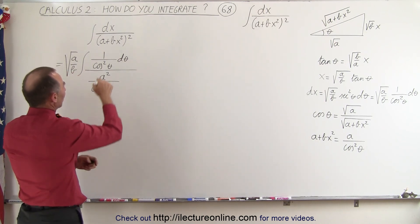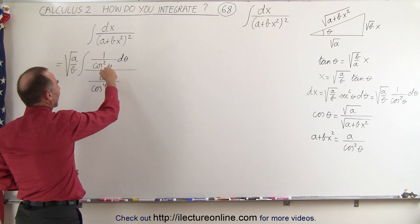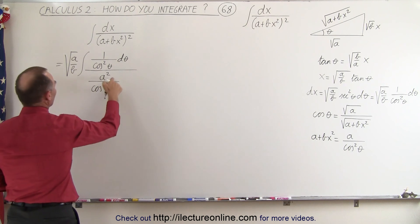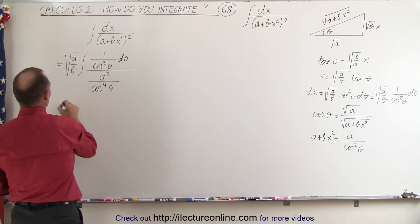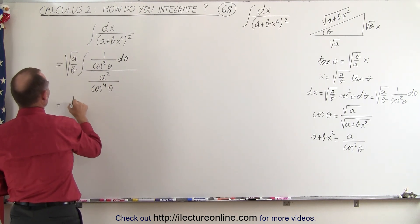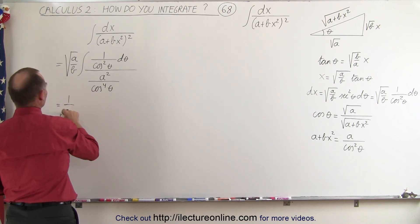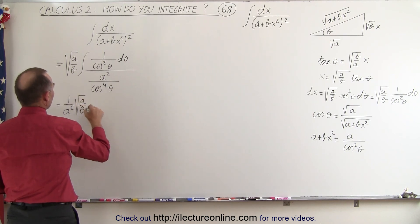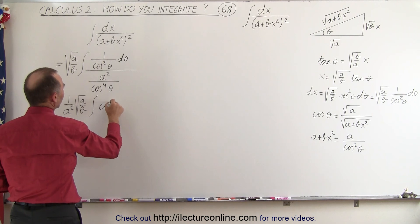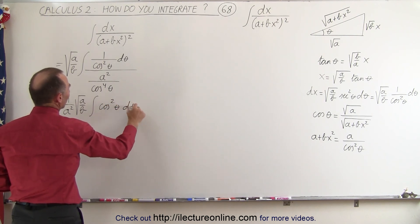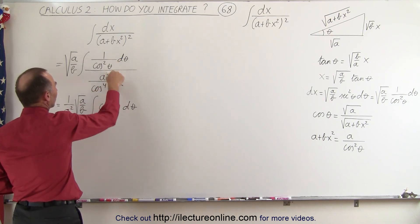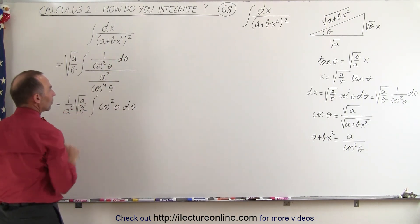We have 1 over the cosine squared divided by A squared over the cosine to the fourth — that's the same as multiplying by its inverse. We can pull out the A squared, so this becomes 1 over A squared times the square root of A over B, times the integral of the cosine squared of theta D theta. When we simplify, we end up with cosine squared of theta in the numerator, and the 1 over A squared gets pulled out of the integral sign.